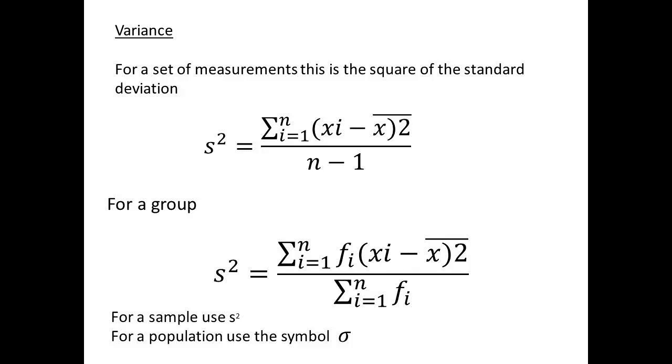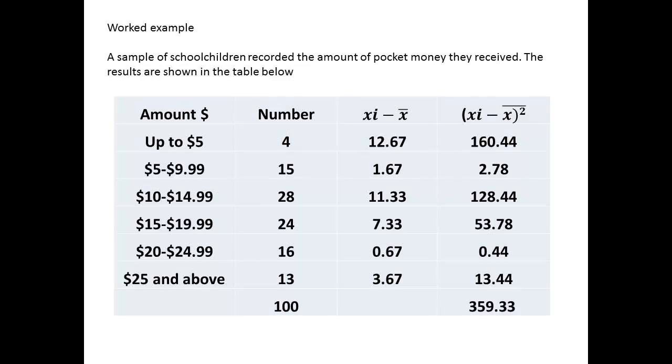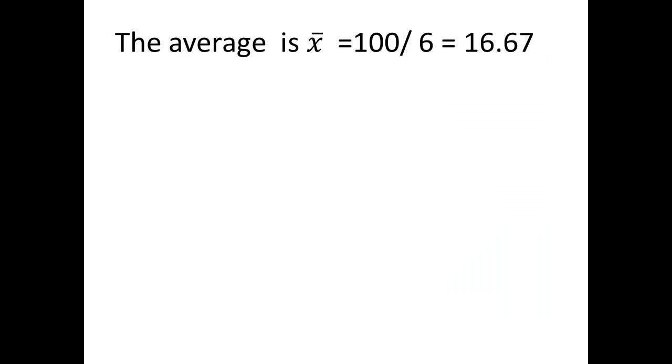For data grouped by frequency, this will become S² equals Σfi(Xi - X̄)² divided by Σfi. We will follow a worked example through. The table of data shows the amount of pocket money a sample of children received, grouped to give frequency. The table also shows the result of Xi minus X̄, and (Xi - X̄)². The arithmetic mean X̄ is given by 100 divided by 6, which is 16.67.